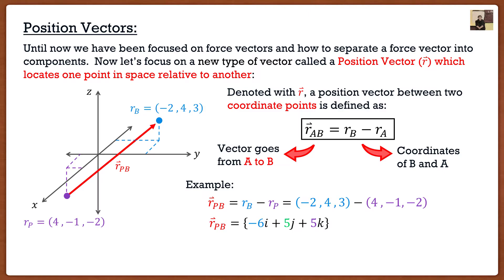The result is a vector. The first component is negative 6i — from taking negative 2 minus 4. The second component is 5j — from taking 4 minus negative 1. The k component is 5k — from 3 minus negative 2. These components represent the path along the axes: 6 units in the negative x direction, 5 units in the positive y direction, and 5 units in the positive z direction. Position vectors work exactly the same as force vectors — the only difference is we're dealing with units of distance instead of force.